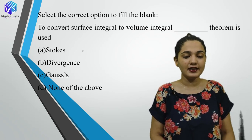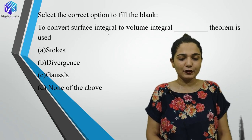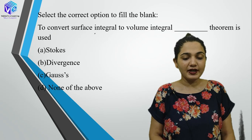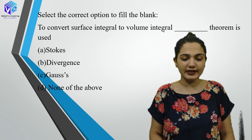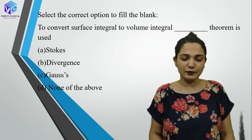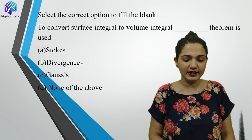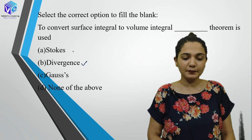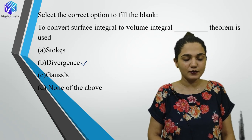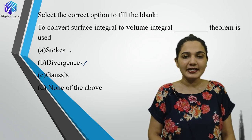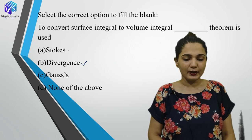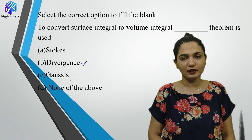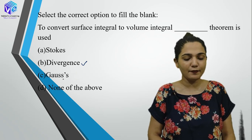Let's start with the first question: select the correct option to fill the blank. The question is — to convert surface integral to volume integral, which theorem is used? The correct answer is the Divergence Theorem. Stokes theorem converts the line integral to area or surface integral. Gauss's law is in another unit.